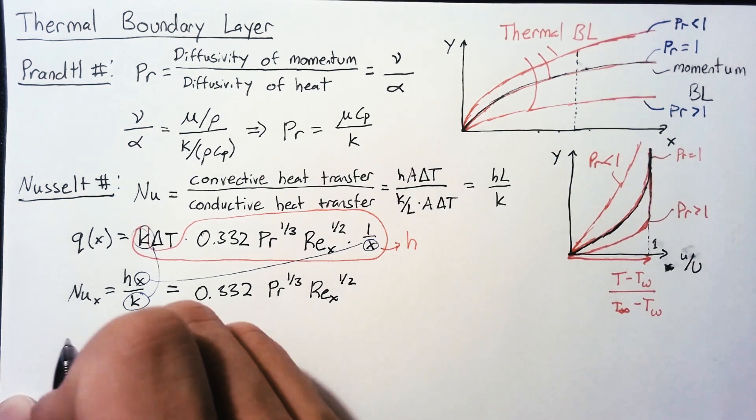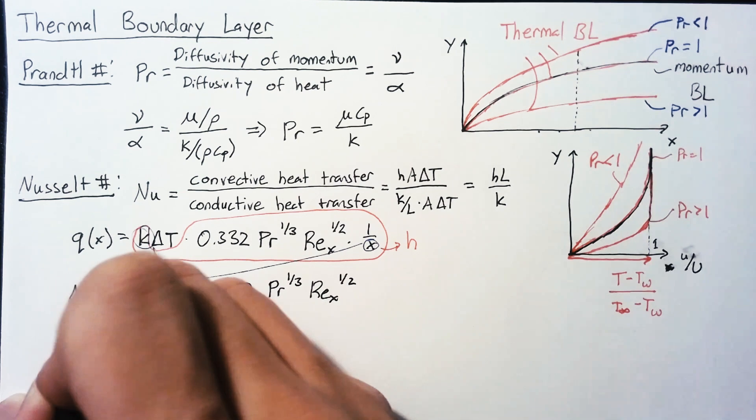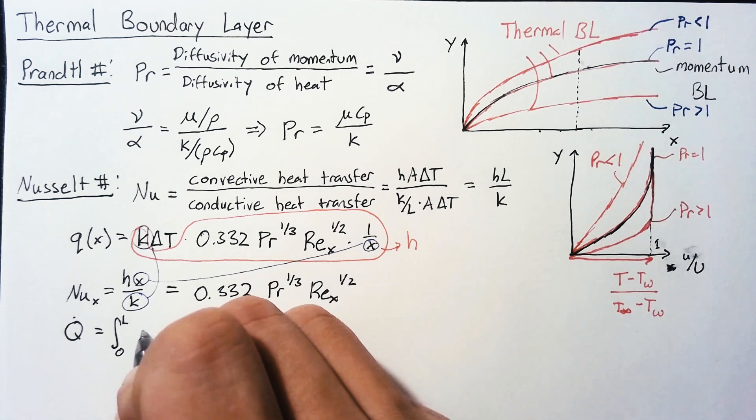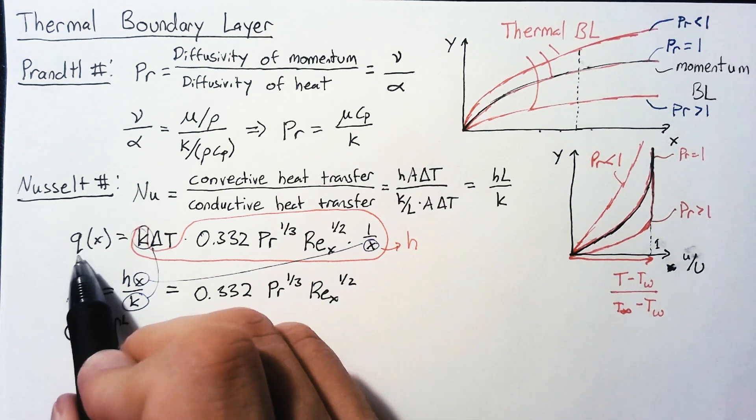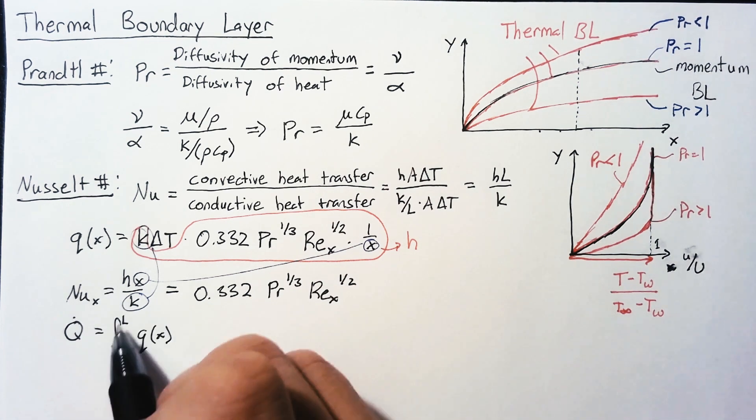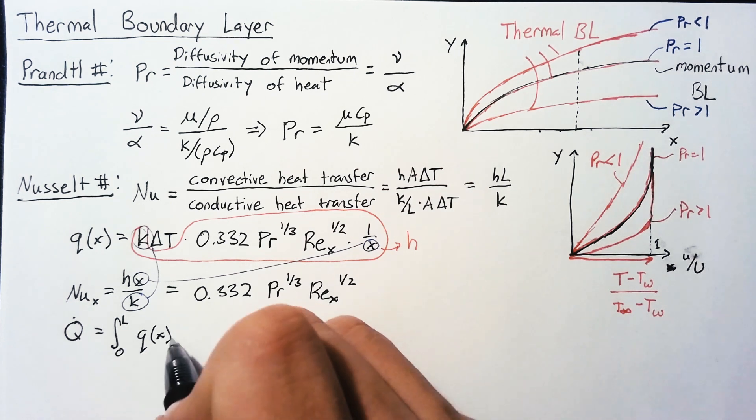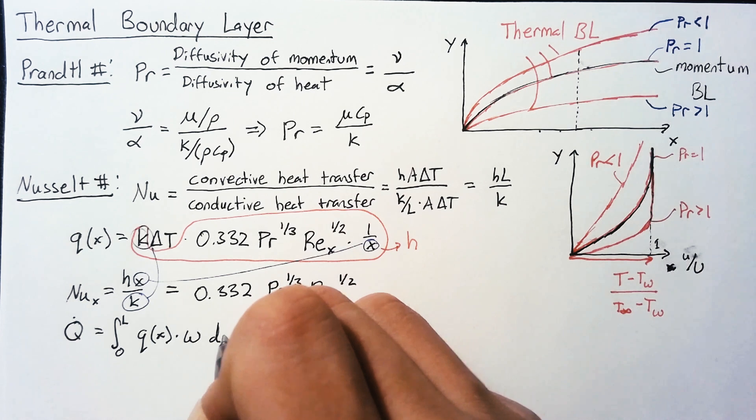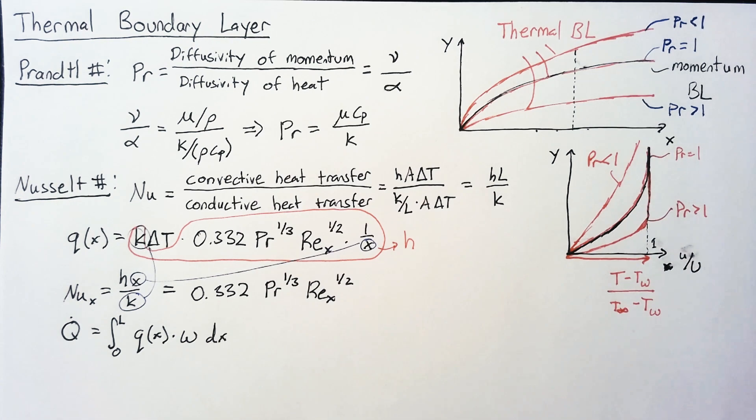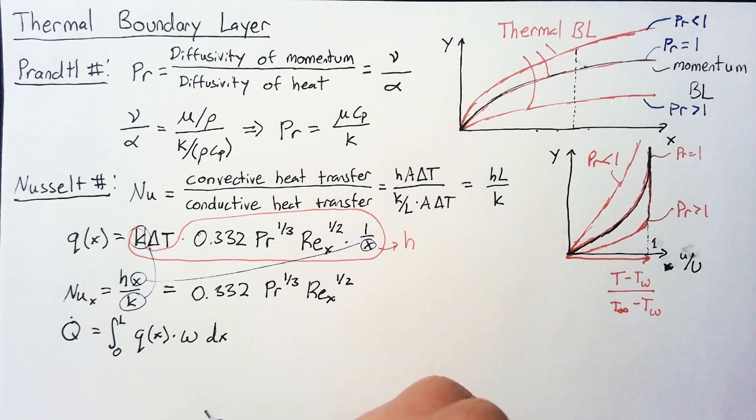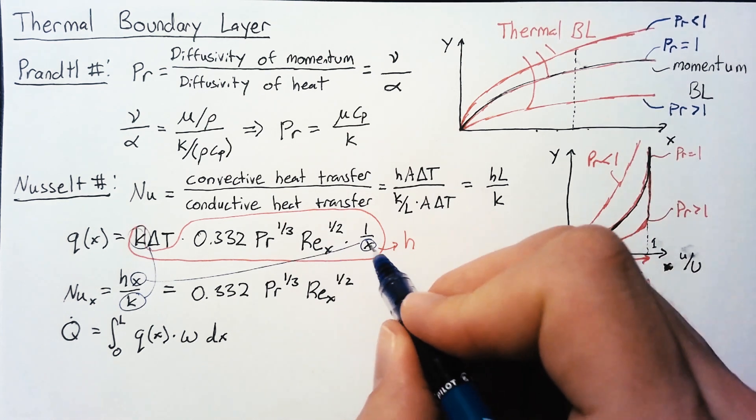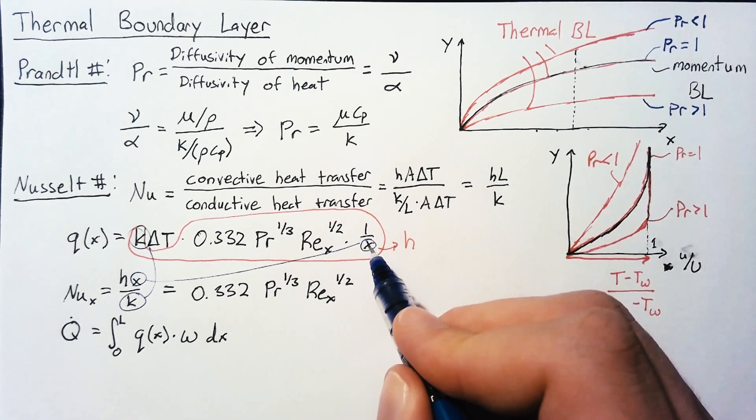The total Q, the Q that we have over the entire flat plate, is going to be the integral over the entire length of that q. This q is per meter squared. The length takes care of one of those meters. We also need to multiply by the width of the flat plate, and we're integrating in the dx direction. This integral isn't too bad. We have a variable X in the Reynolds number and we have a variable X in the denominator.